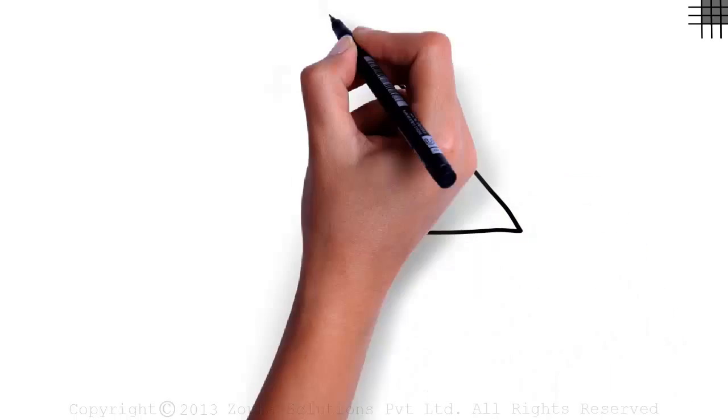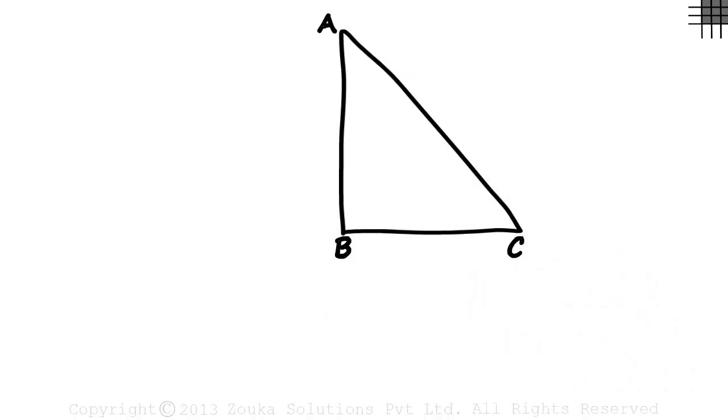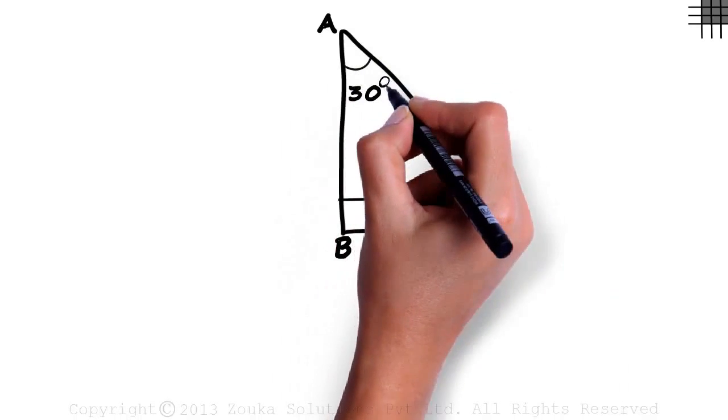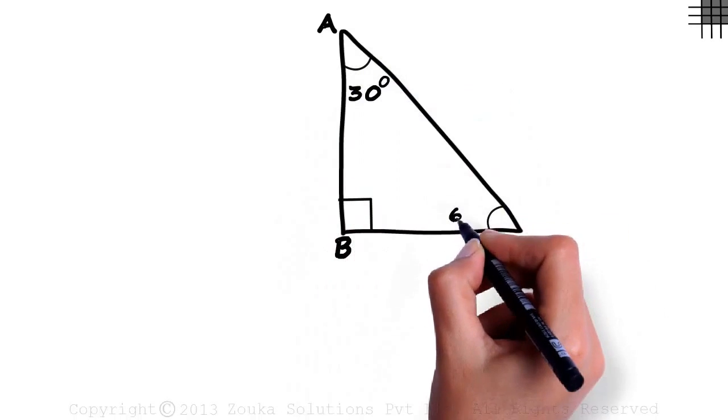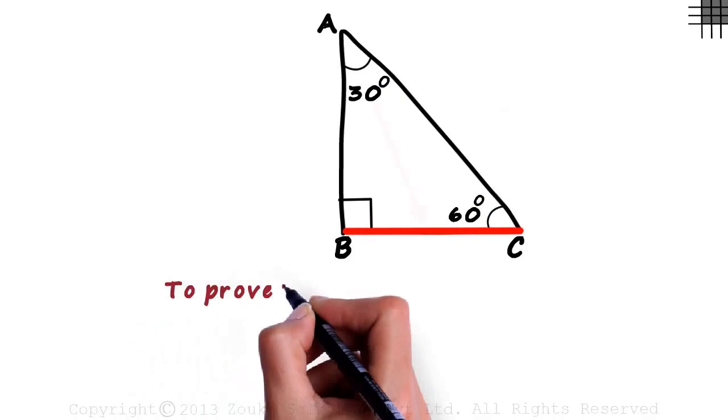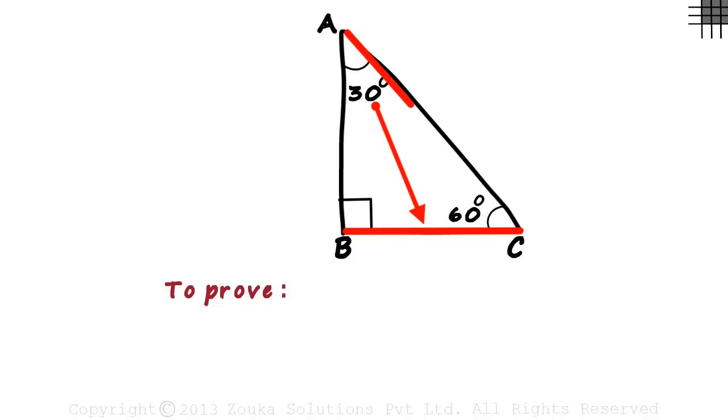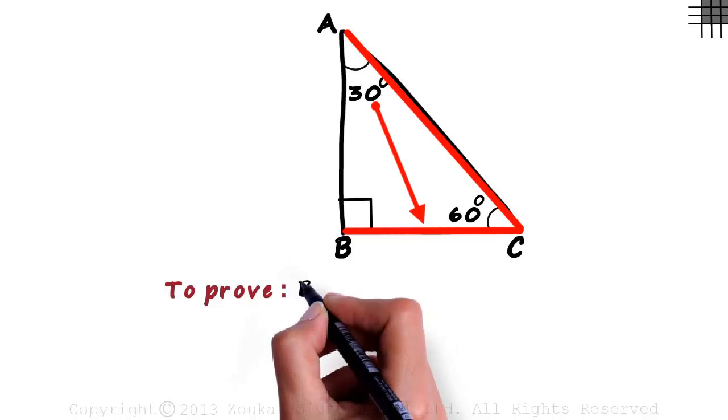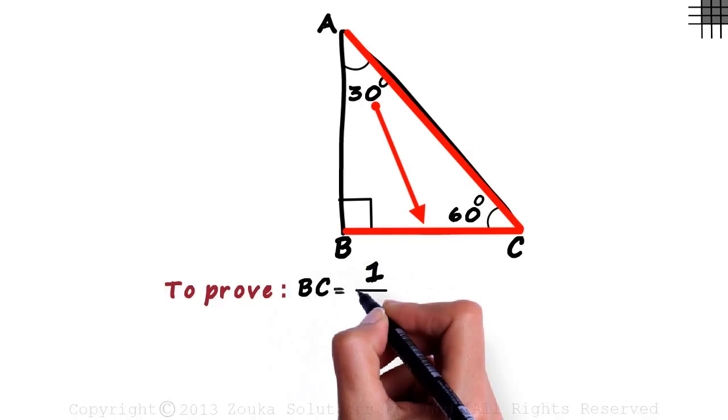We are given a 30-60-90 triangle named ABC. It is right angled at vertex B. Measure of angle A is 30 degrees and angle C measures 60 degrees. We have to prove that the side opposite 30 degrees is half the length of the hypotenuse. That is, BC is equal to half AC.